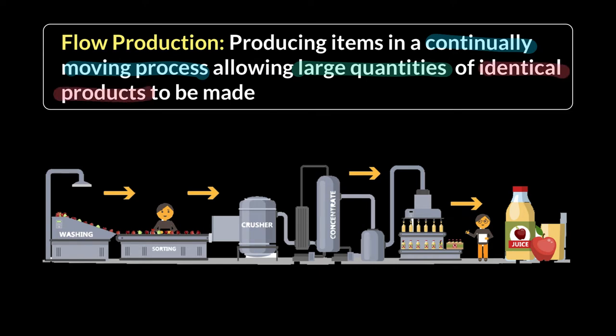Flow production provides speed but takes away the customization advantage that job production had. Here you're making one type of product but making lots of it — that's the flow production process. This picture of a factory making apple juice illustrates two very important things.